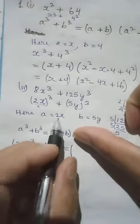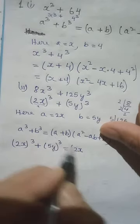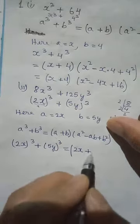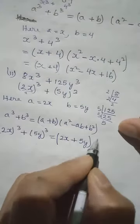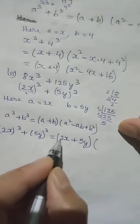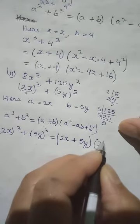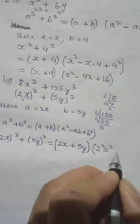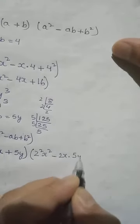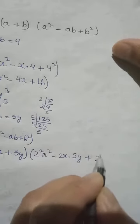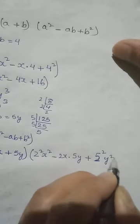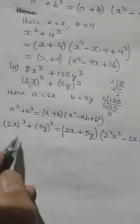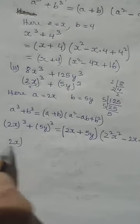It equals: open bracket, in place of a put 2x, then plus, in place of b put 5y, close bracket. Then open bracket: a square means 2x whole squared — since we have two numbers and an alphabet, we square both. Then minus ab, so 2x multiplied by 5y. Then plus b square, which is 5y whole squared — square the 5 and square y.